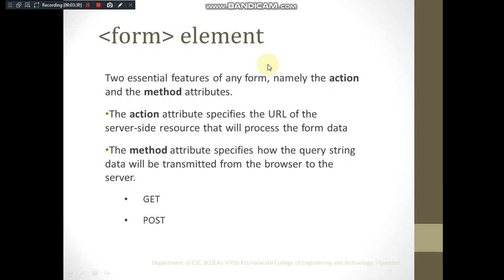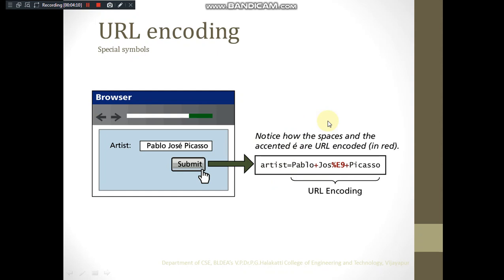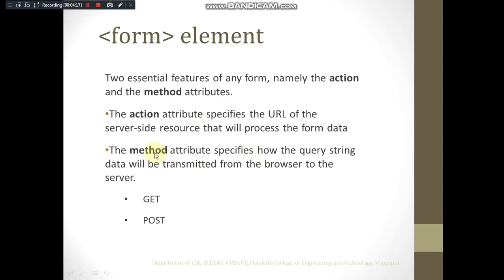For the form tag, we use mainly two attributes. The 'action' attribute specifies the URL of the server-side resource that will process the form data — this is where we are sending the data to be processed. The 'method' attribute specifies how the query string data will be transmitted. The two possible values are GET or POST.